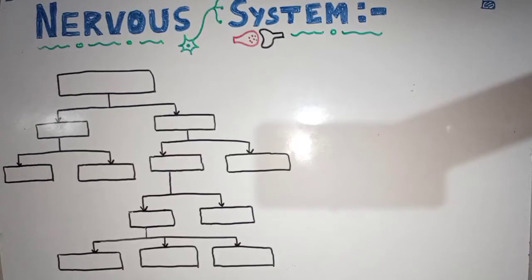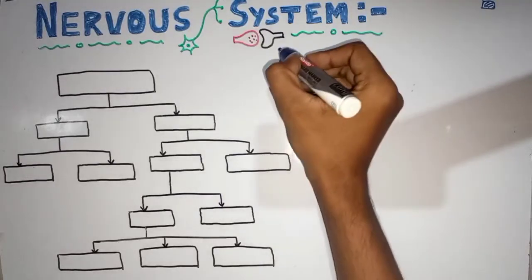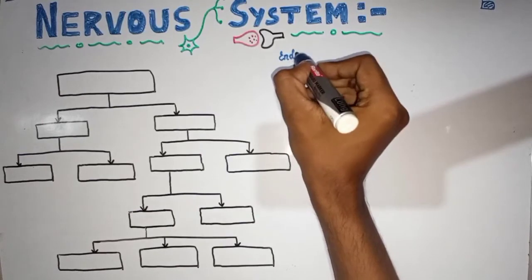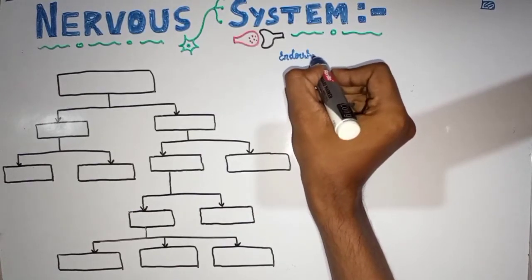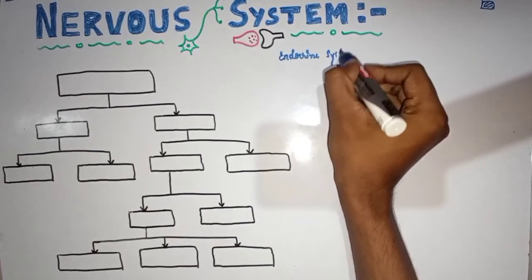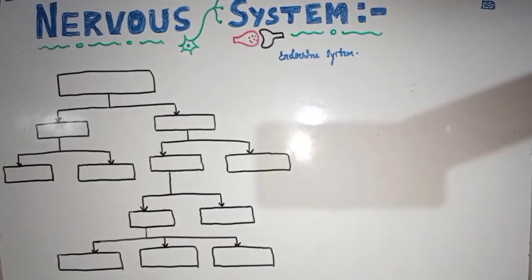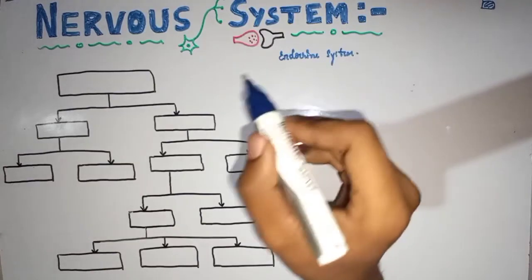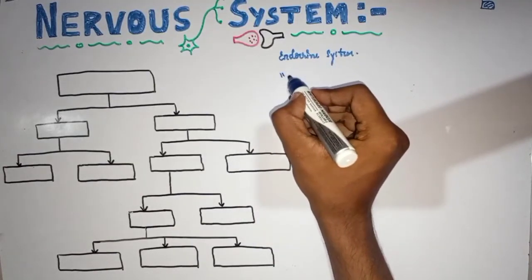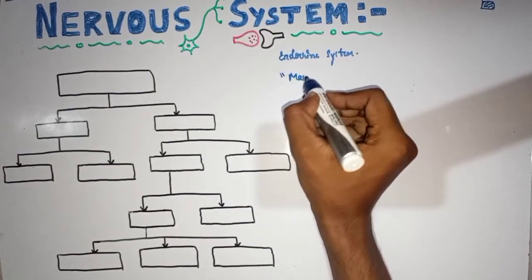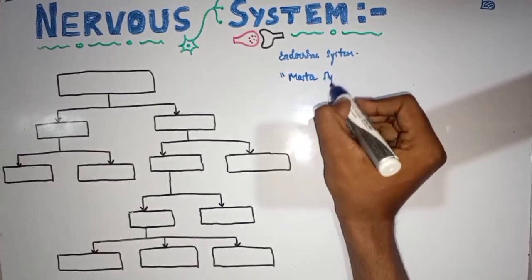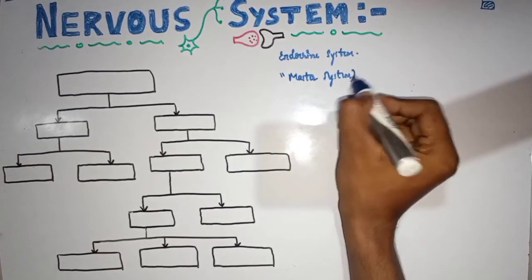In this video I will discuss some basic details of the nervous system and its divisions. The nervous system, along with the endocrine system, works in the regulation of various body functions. Because the nervous system regulates other body functions, it is called the master system.